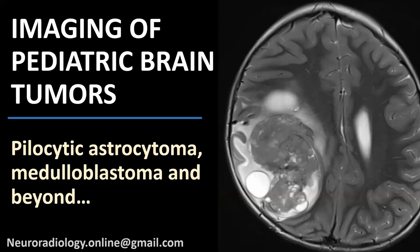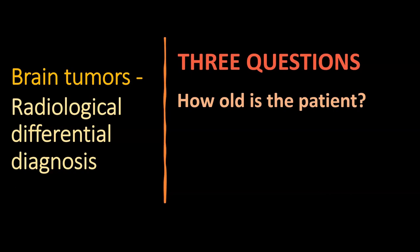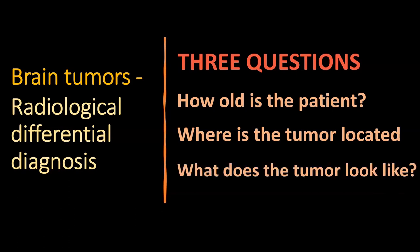Tonight we're going to talk about pediatric brain tumors. Personally this is a subject I love, despite the fact that we are dealing with very bad pathology. While some of these tumors are benign, all in all it's very severe pathology in young children. But from a radiological point of view, these are quite fascinating tumors and a very interesting topic. My approach when dealing with a brain tumor involves three questions: How old is the patient? Where is the tumor located? And what does the tumor look like on imaging — which I consider the least important.